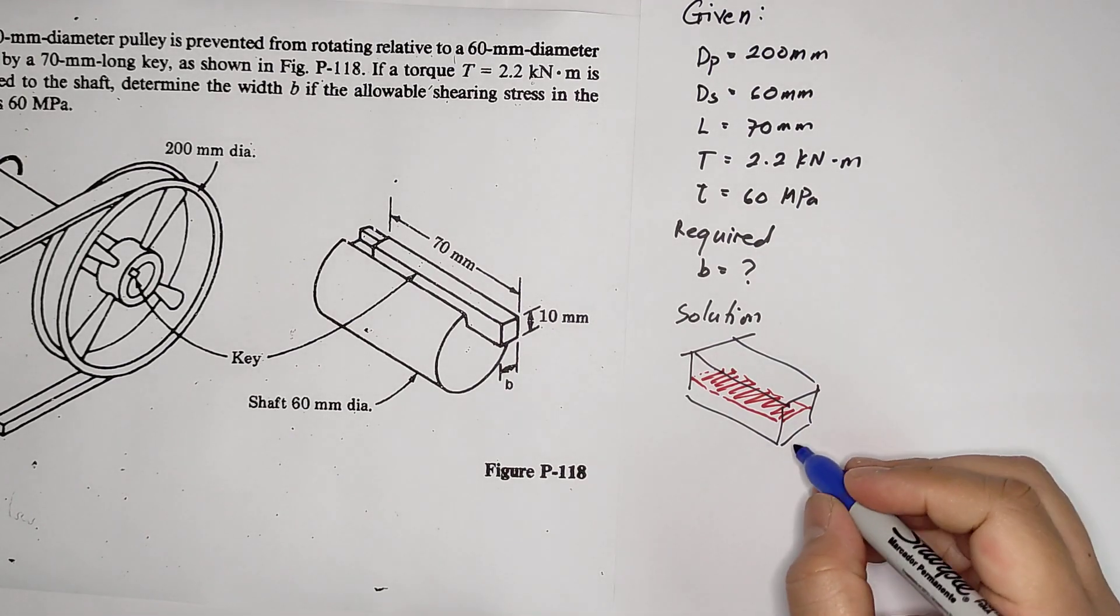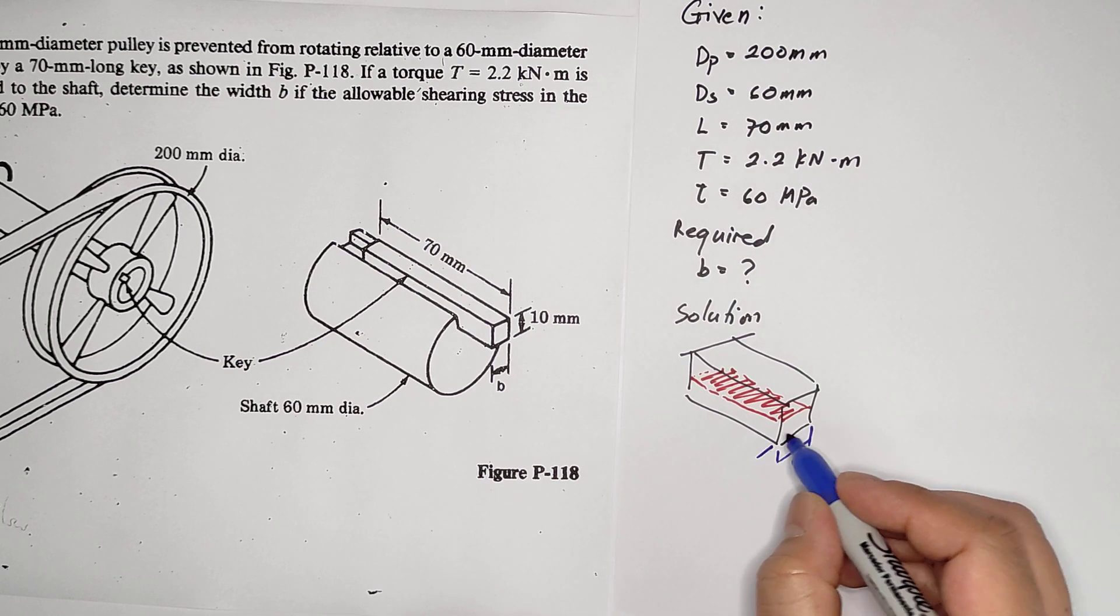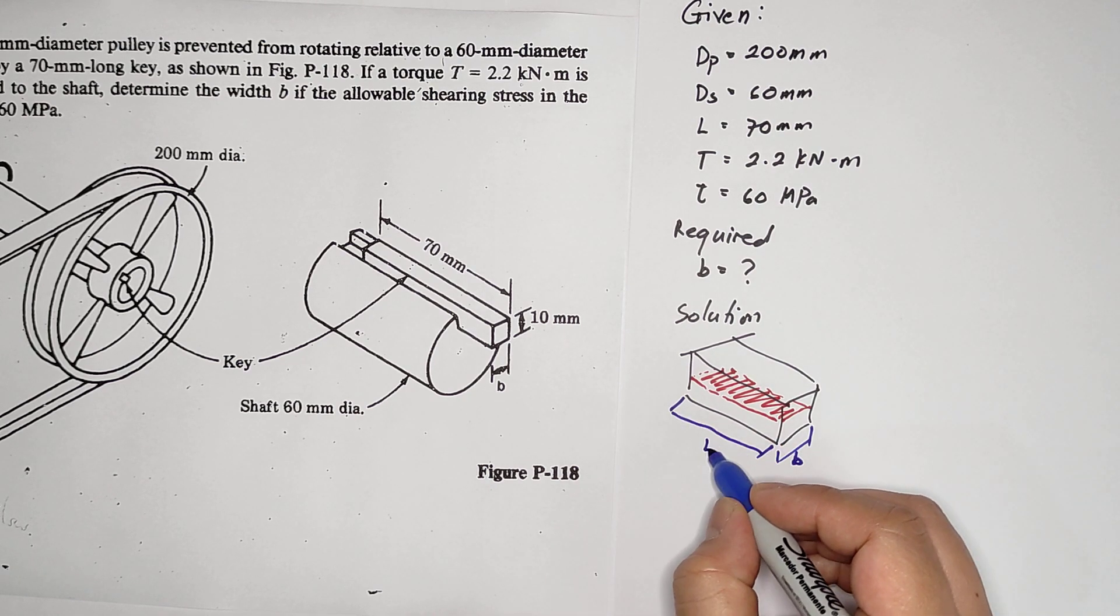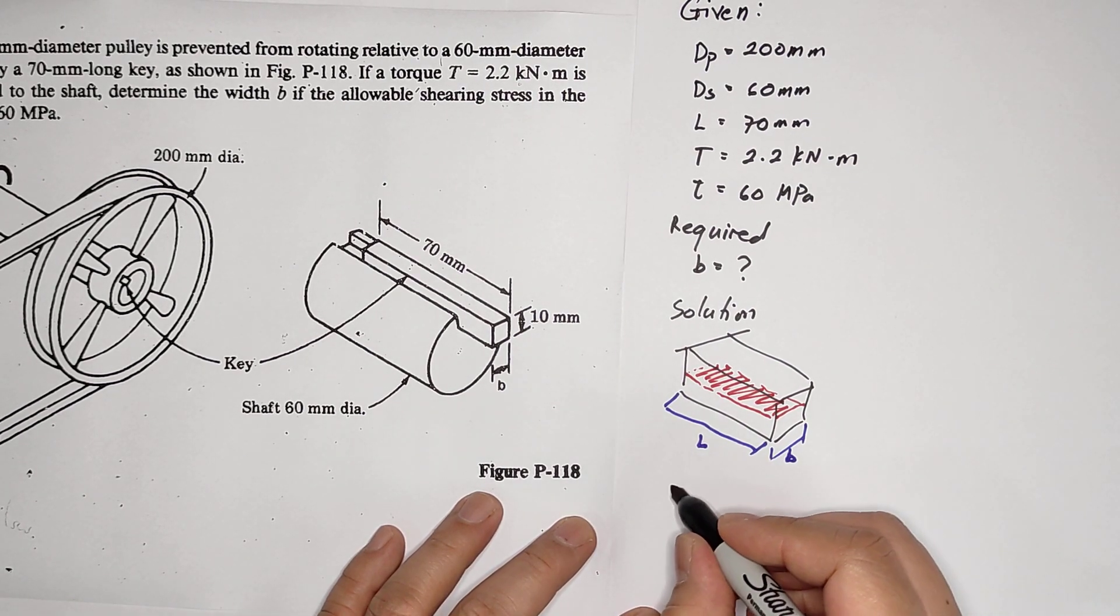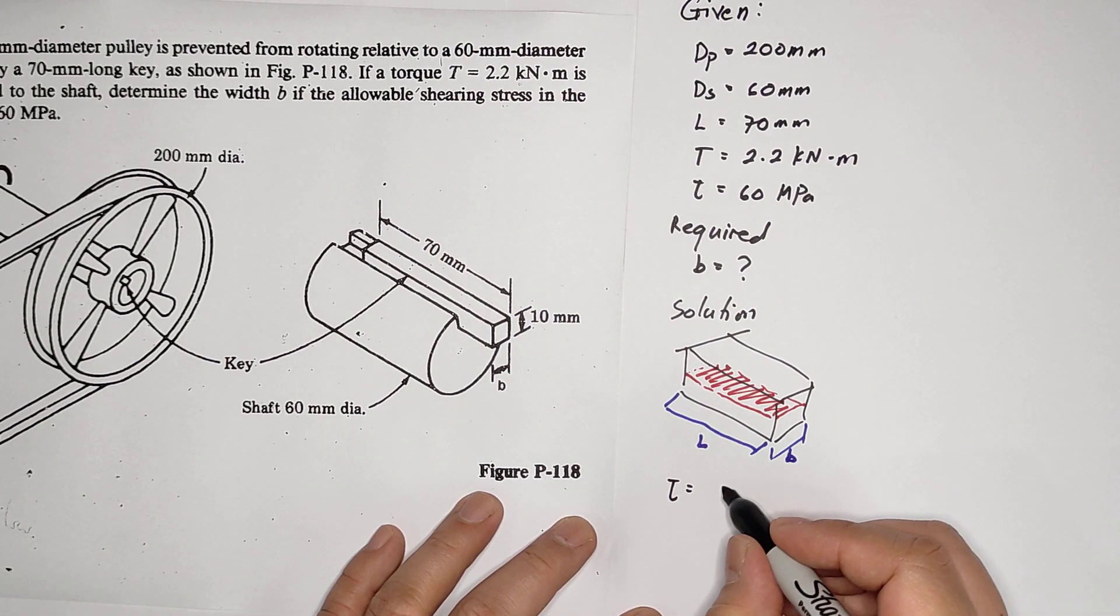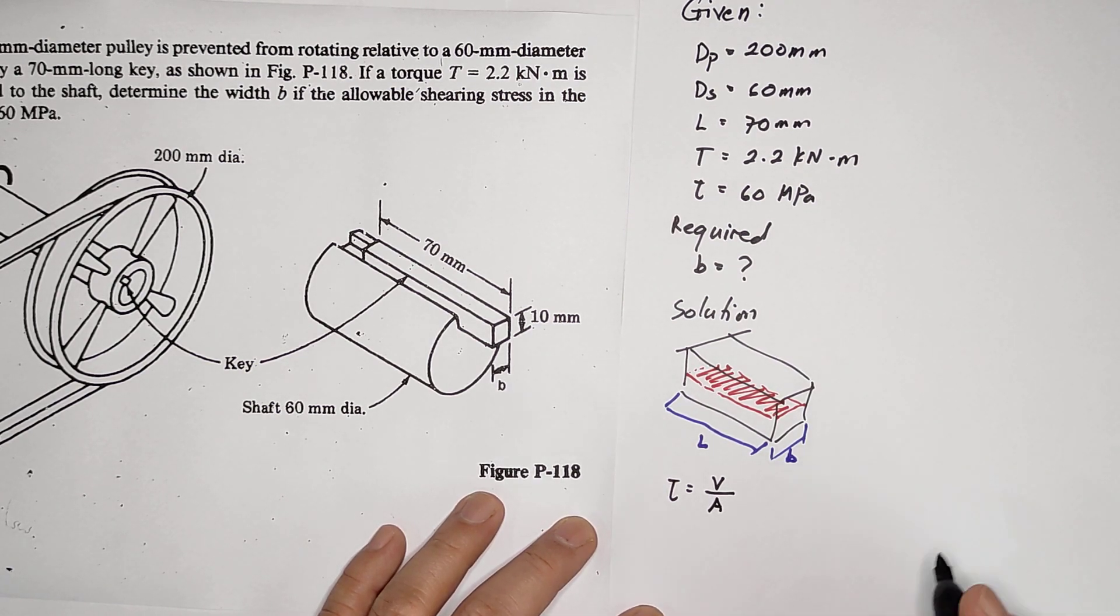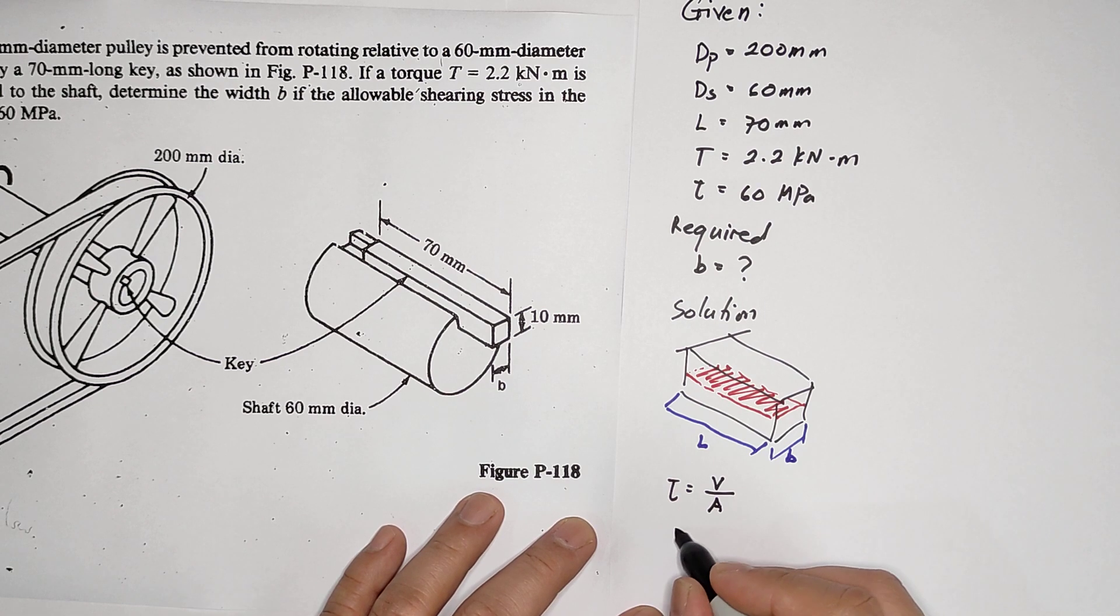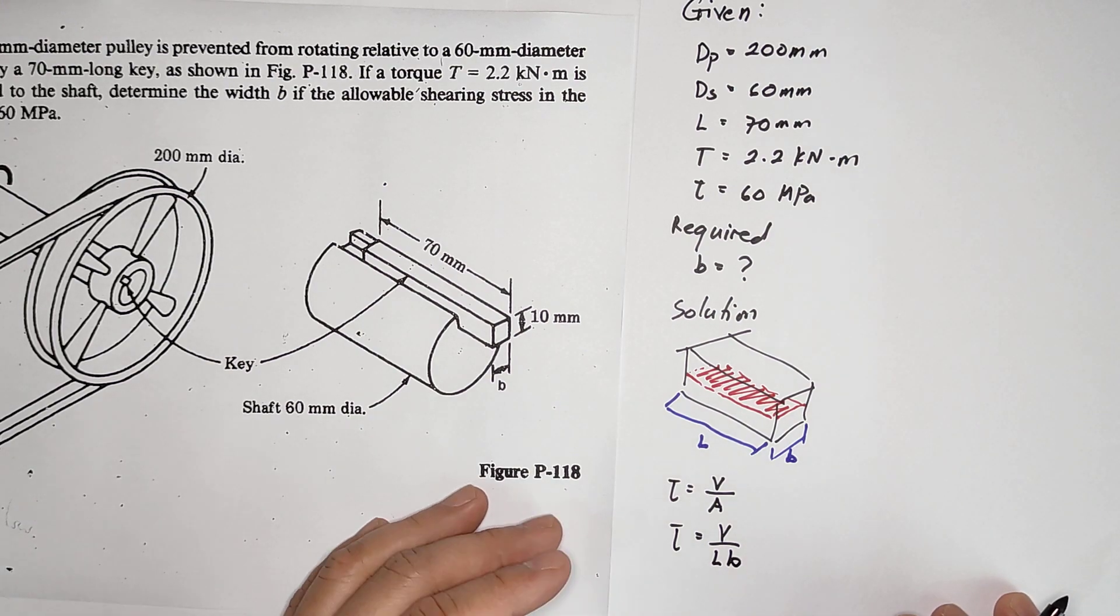The shearing area is the red area. That red area, you have B times the length of the key. The length of the key is given, that is 70 mm. The stress is given by V over area, and the area would now be length times B.